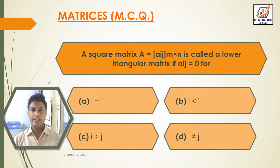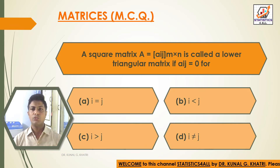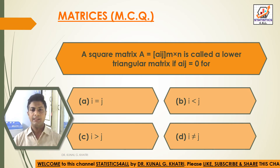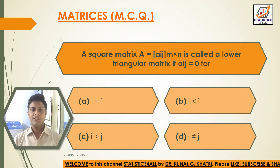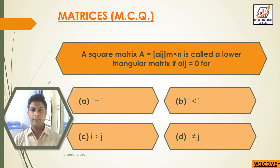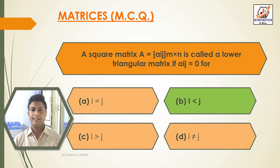Next question: a square matrix A = A(i,j), an M×N matrix, is called a lower triangular matrix if A(i,j) is equal to 0 for — option A: i equal to j; option B: i less than j; option C: i greater than j; option D: i not equal to j. The answer is option B, that is i less than j. A square matrix is called a lower triangular matrix if A(i,j) = 0 when i < j.